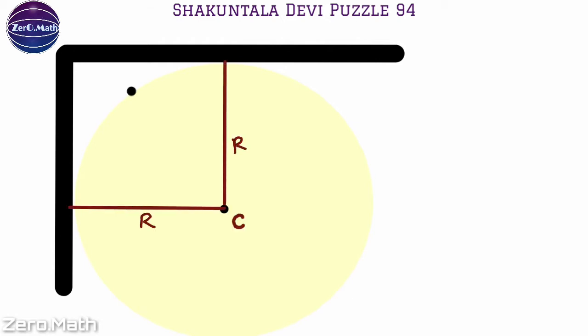Let's draw a radius of the circle touching the center of the table and the point where the wall touches the circle. Let's name these touch points as A and B, and call this ink spot as O. We know that the ink spot is at eight inches from one wall and nine inches from the other wall.